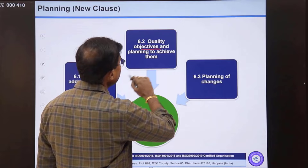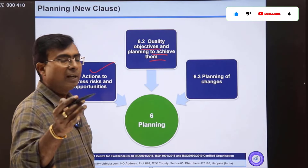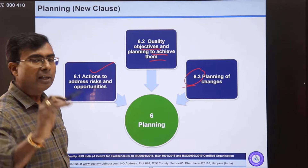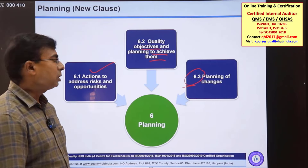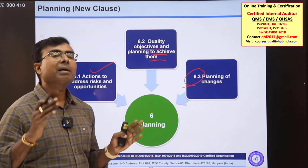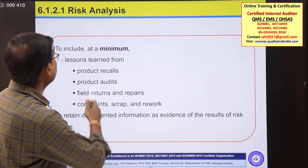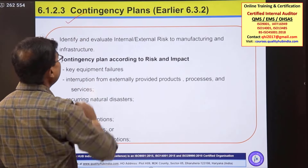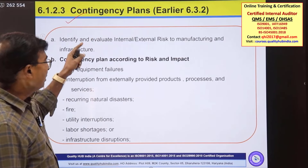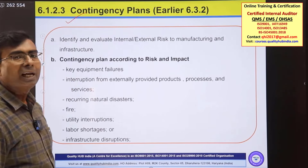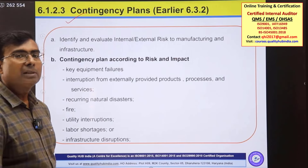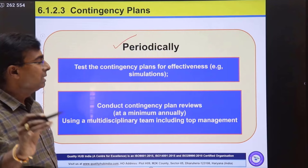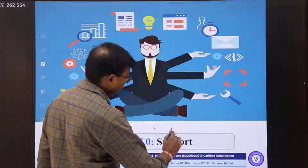Clause six covers planning with three sub-clauses: actions to address risks and opportunities, quality objectives, and planning to achieve them. Change management is also part of clause six. In 6.1.2.1 there are additional requirements pertaining to risk analysis. 6.1.2.3 is an exclusive IATF 16949 requirement that talks about contingency plans — you should have a notification process, periodically evaluate the effectiveness of your contingency plan, and review it also.